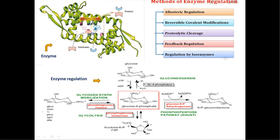Enzymes are proteins which are controlling the speed of chemical reactions in our body. Enzymes are also known as biological catalysts. Enzyme regulation is the process by which the activity of enzymes will be controlled or regulated in order to regulate metabolic processes. Many enzymes work together in a multi-step enzymatic process, but one enzyme is responsible for regulating the metabolic process. Those enzymes are called regulatory enzymes, and they are also known as rate-limiting enzymes.